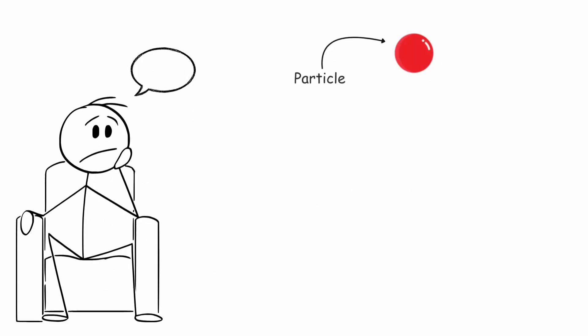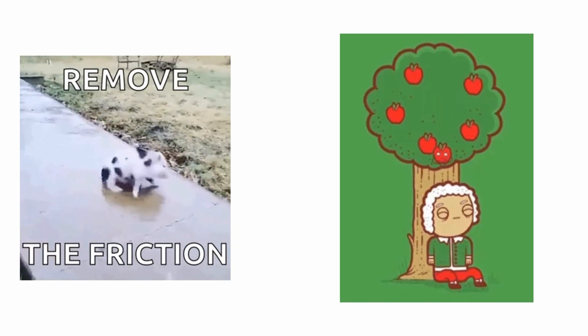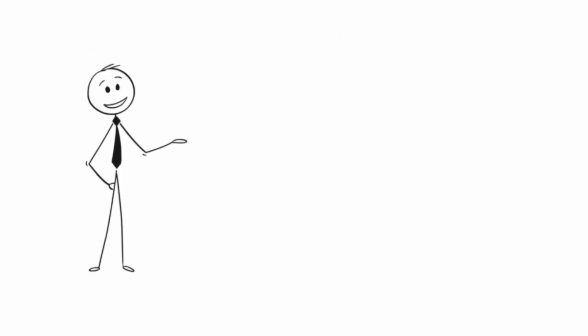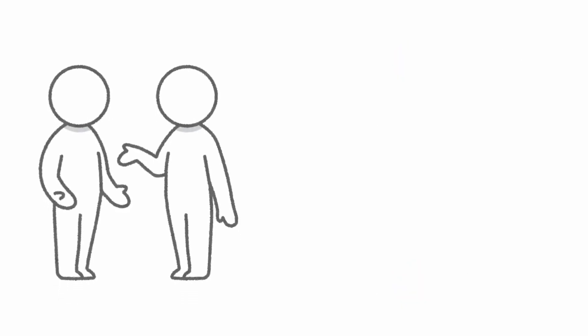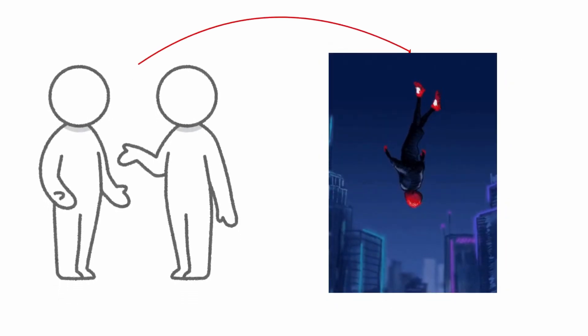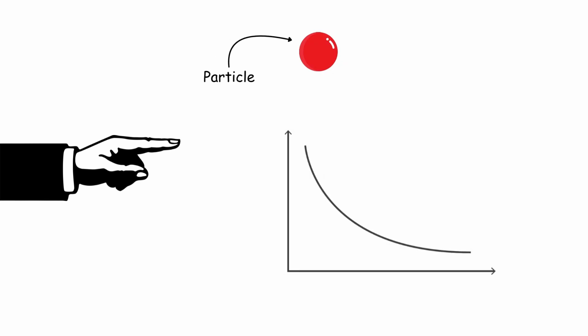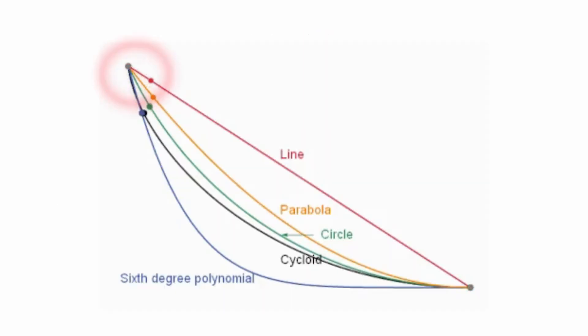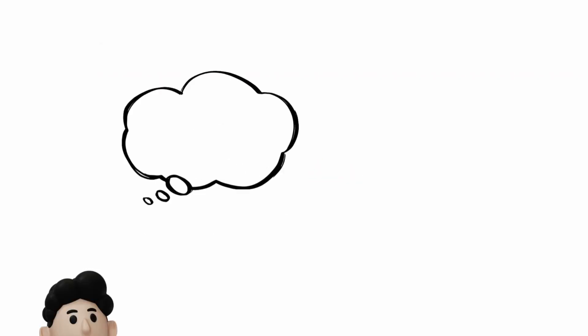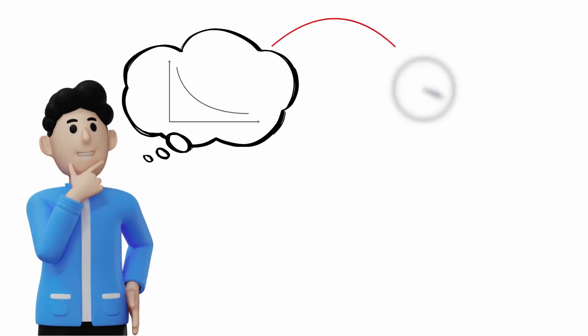Suppose we drop a particle from point A to point B, frictionless and under the sole influence of gravity. The most intuitive option would be a straight path. However, experience tells us that objects in free fall accelerate as they descend. This means that if the particle follows a curve that allows it to gain speed quickly at the start, it could reach its destination more quickly. In this case, the goal is to find a curve that minimizes travel time in a gravitational field.